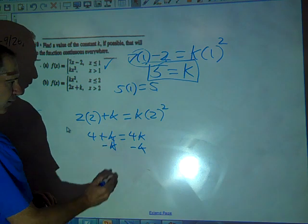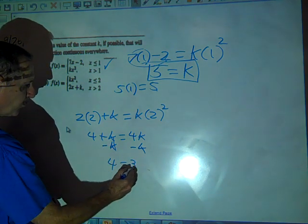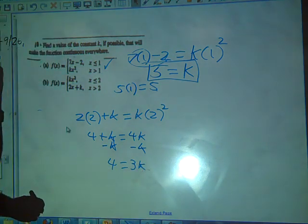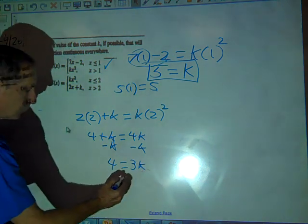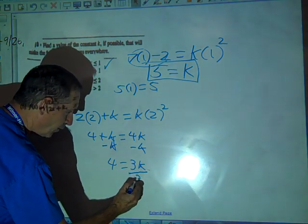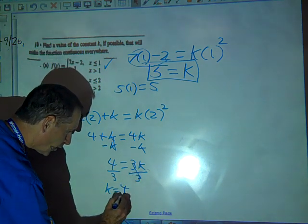So we have 4 equals 3k. Right? And then how do we solve for k? So we go ahead and divide by 3, divide by 3, k equals 4 thirds.